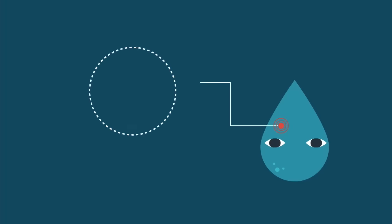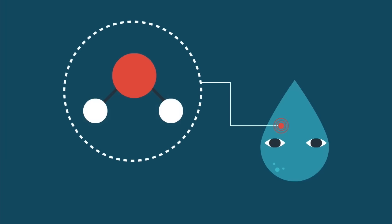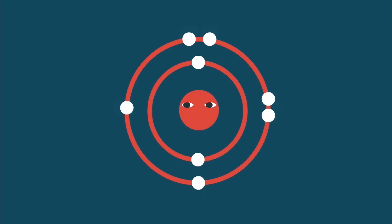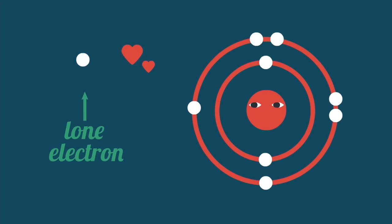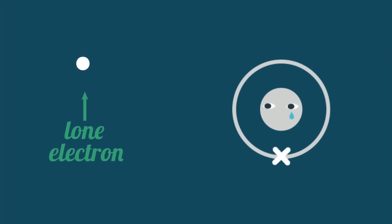Water is made from one oxygen atom and two hydrogens. The oxygen has six electrons in its outer shell but it really wants to have eight. The hydrogens have one outer shell electron but they want to have two.